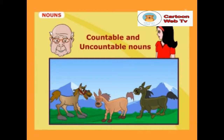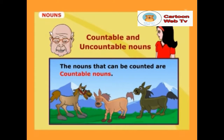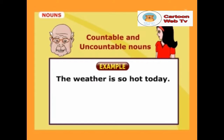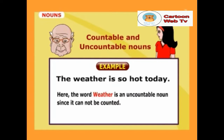Nivia, can you tell me how many horses are here? There are three horses, Grandpa. Good. You could count them correctly. The nouns that can be counted are countable nouns. That is why the word horses is a countable noun. And the nouns that cannot be counted are uncountable nouns. For example, look at this sentence: 'The weather is so hot today.' Here, the word weather is an uncountable noun since it cannot be counted.